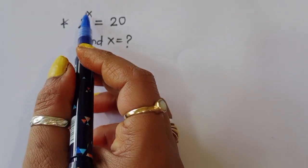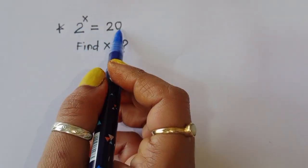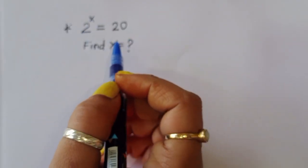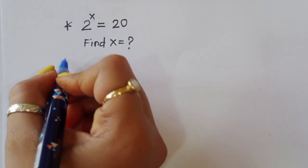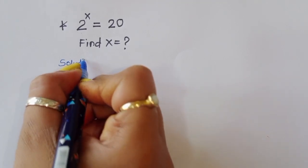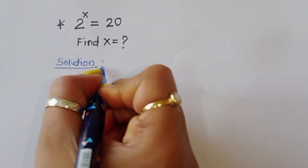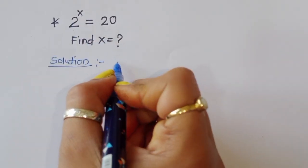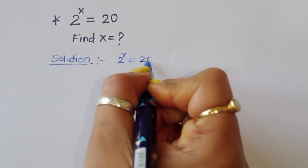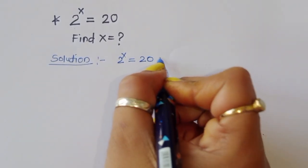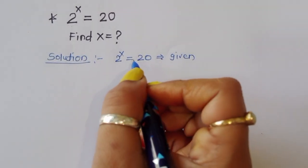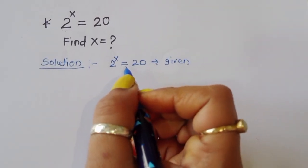The question is: given 2 to the power x is equal to 20, we have to find out the value of x. Let's see the solution. 2 power x is equal to 20 — this is the given question.